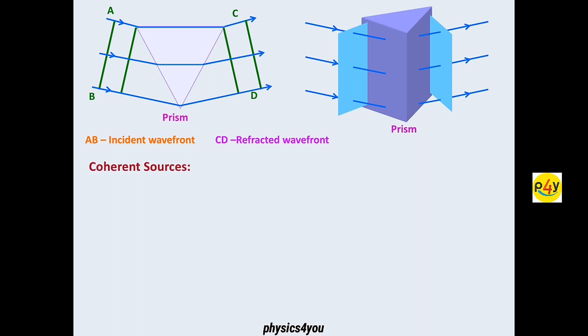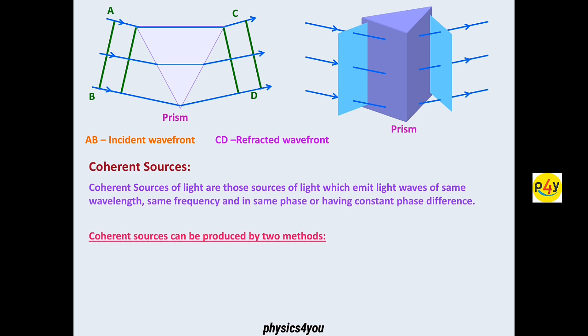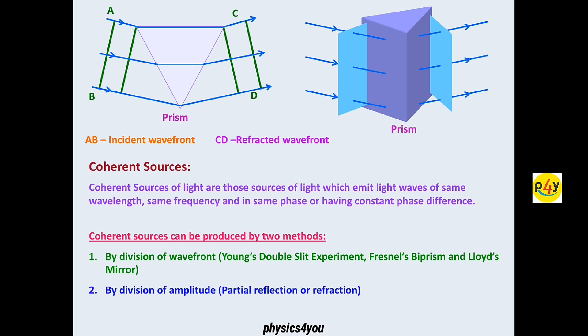Coherent sources can be produced by two methods. By division of wavefronts, we will look at the next topics: Young double slit experiment, and the other one is Fresnel's biprism and Lloyd's mirror experiment. The second point is by division of amplitude, partial reflection and refraction, which we did in Michelson interferometer experiment.